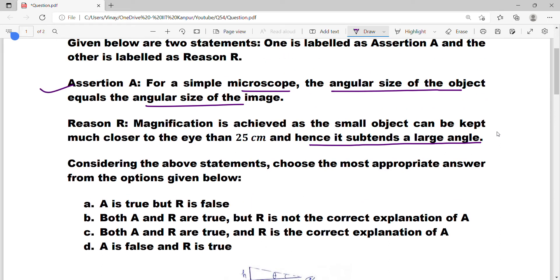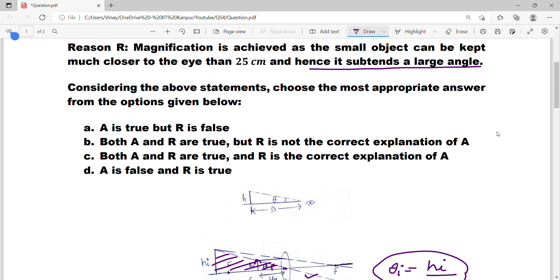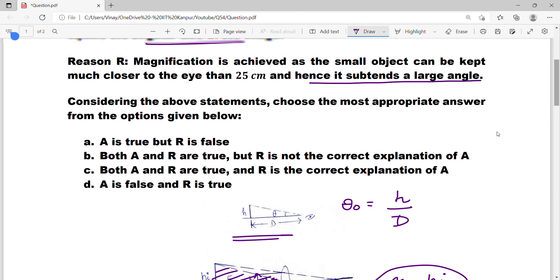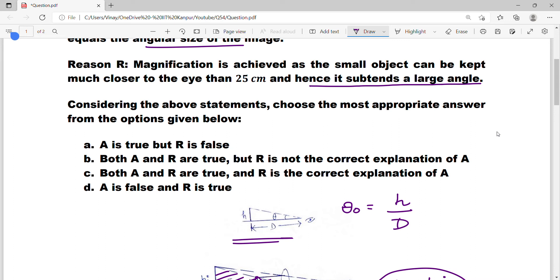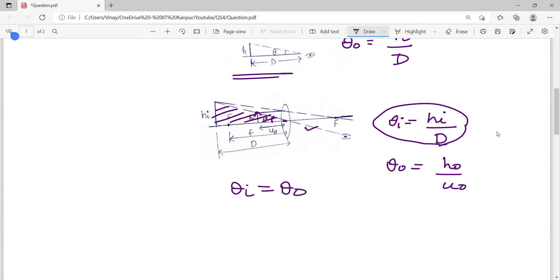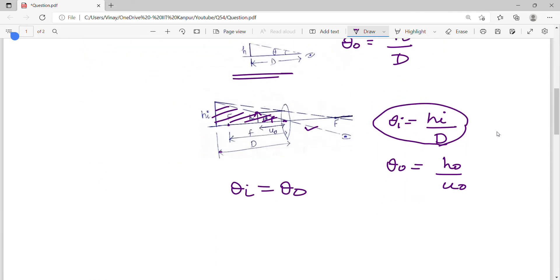Now the second statement: magnification is achieved as the small object can be kept much closer to the eye. At distance d, if you keep the object at less than d distance, we are putting the object less than d. From simple math, theta i equals theta naught, so h_i upon d equals h_object upon u_naught.